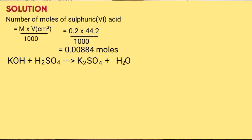Equation for the reaction: potassium hydroxide plus sulphuric acid → potassium sulphate plus water. Balancing the equation: place 2 with potassium hydroxide, then place 2 with water. The mole ratio is 2 to 1.